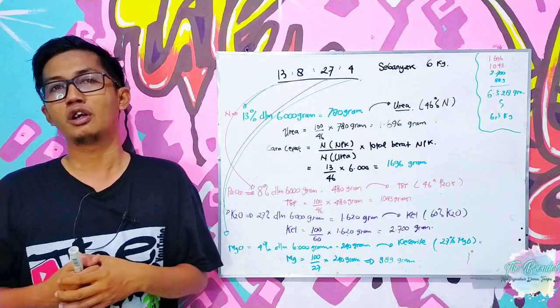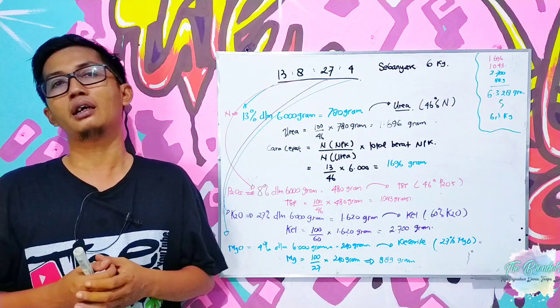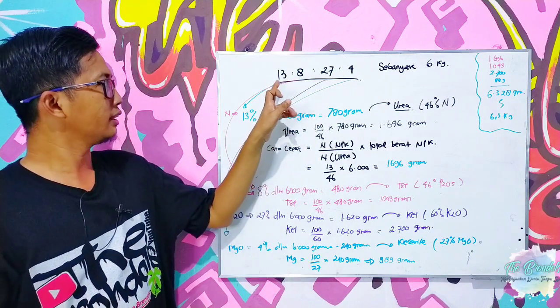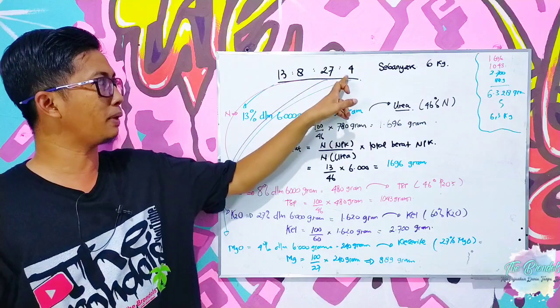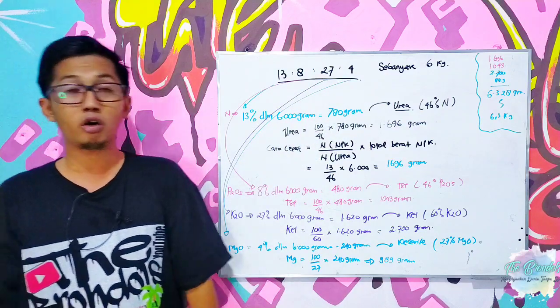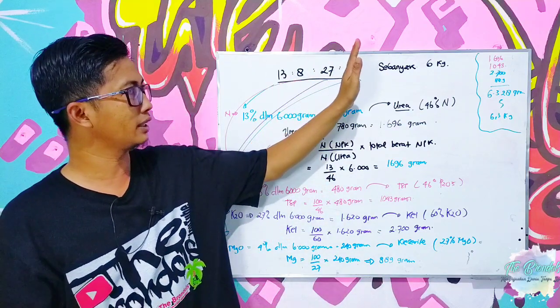Dia ini adalah salah satu seorang petani yang ingin menyetarakan unsur hara pada NPK, yang misalnya rekomendasi 13-8-27-4 plus 0.65 boron, tapi boronnya tidak masuk perhitungan Pak Pendi.